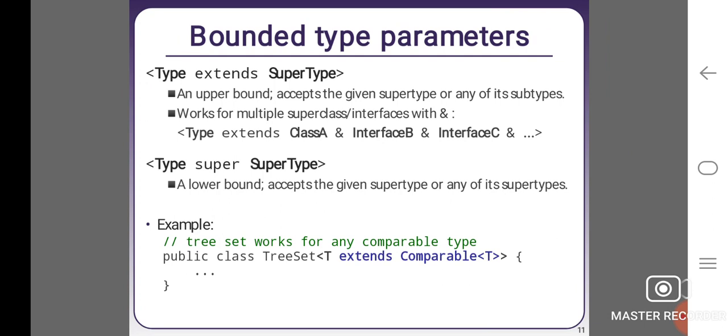Bounded type parameters. <Type extends SuperType>. An upper bound accepts the given supertype or any of its subtypes. It works for multiple superclass/interfaces with <Type extends ClassA & InterfaceB & InterfaceC>. <Type super SuperType>. A lower bound accepts the given supertype or any of its supertypes. For example, TreeSet works for any comparable type.